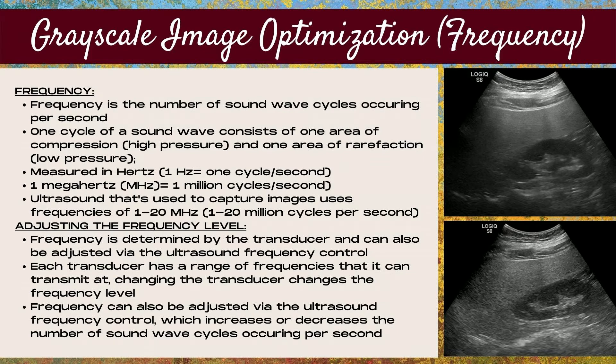One hertz equals one cycle per second. One megahertz, which is what ultrasound uses, is one million cycles per second. Ultrasound used to capture images uses frequencies between 1 and 20 megahertz, which is one to twenty million cycles per second.